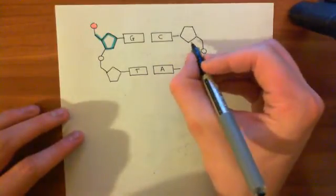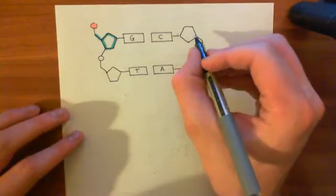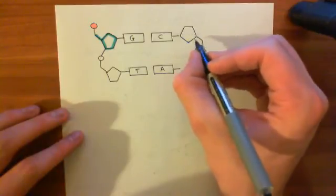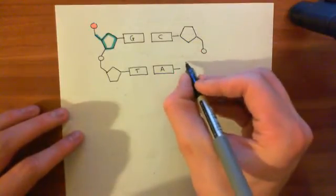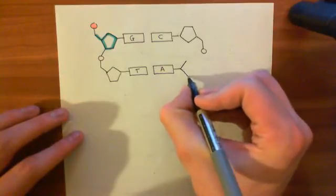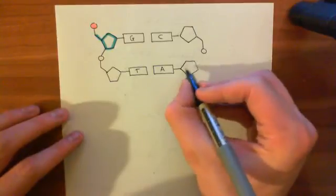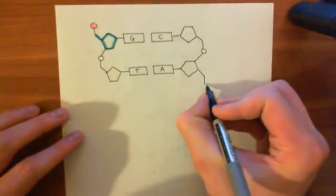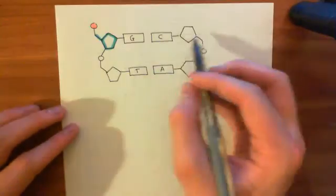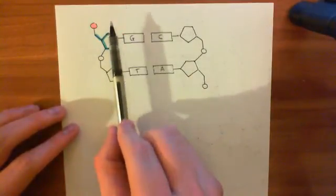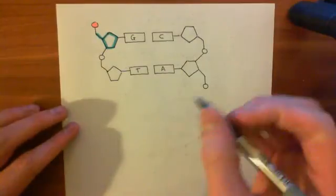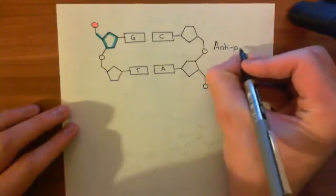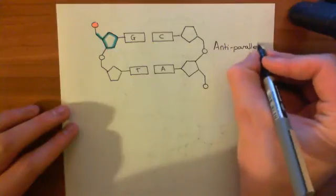The 2-deoxyribose — remember, ribose is in RNA, not DNA. This is DNA, so we're talking about deoxyribose nucleic acid. Here's the next nucleotide along, and it will be linked to the phosphate group of the nucleotide below it. This arrangement where you have one strand of the DNA running one way and the complementary strand running the other way is what's known as anti-parallel arrangement. We say that the two strands of DNA run anti-parallel to one another.